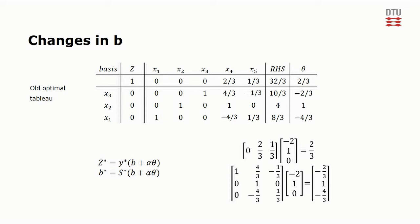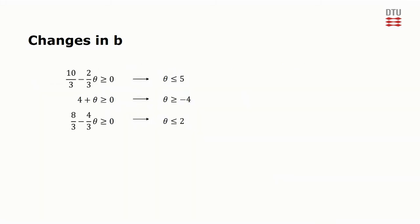We can now determine the interval of theta for which this is the optimal objective value. The necessary calculations are essentially the same as when determining the allowable range for single parameter change. In order for the right-hand side of the constraints to be non-negative, the following inequalities must be satisfied, meaning that theta must be between minus 4 and 2.